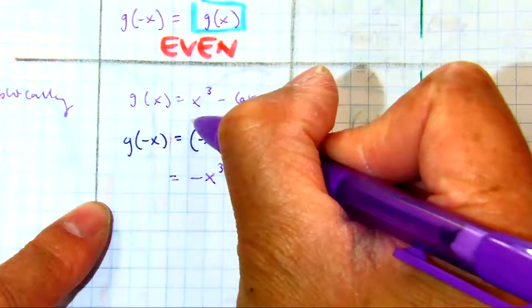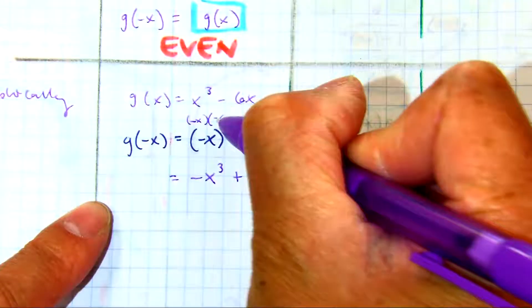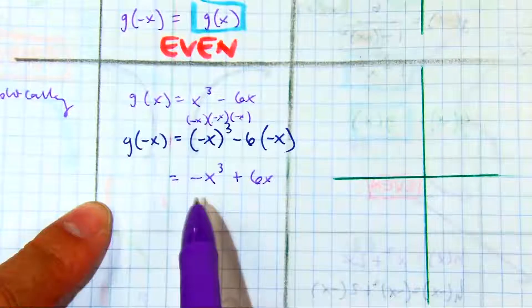So remember, negative x is written three times. Negative times a negative times a negative is a negative.